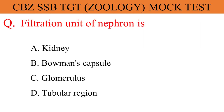The filtration unit of the nephron is: The given options are A. Kidney, B. Bowman's capsule, C. Glomerulus, D. Tubular region. And the correct answer is option C. Glomerulus.